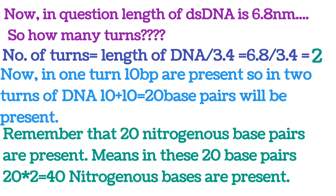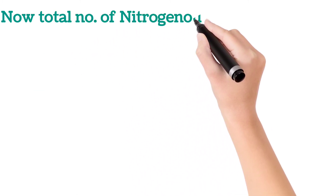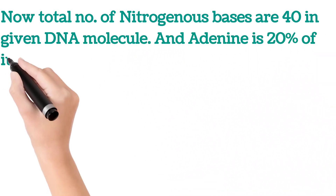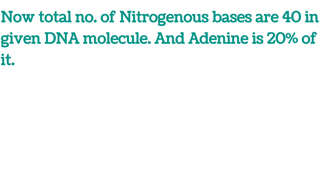We have 20 base pairs. Remember, these are pairs — adenine pairs with thymine, cytosine pairs with guanine. So if there are 20 base pairs, there are 40 individual nitrogenous bases. Therefore, the total number of nitrogenous bases in this DNA molecule is 40, and adenine is 20 percent of it.